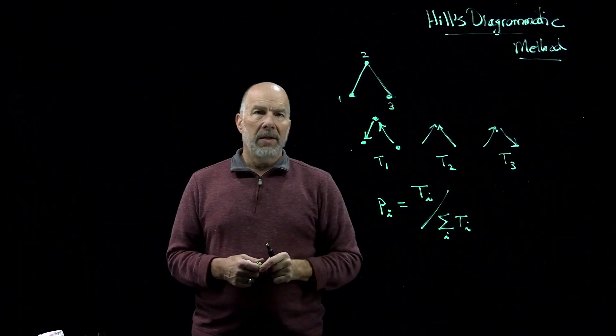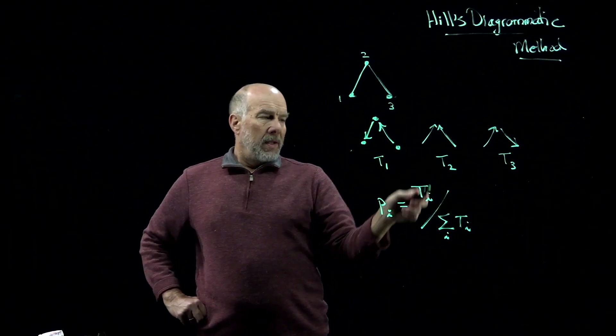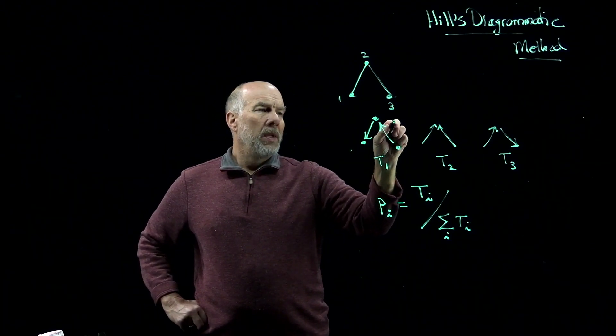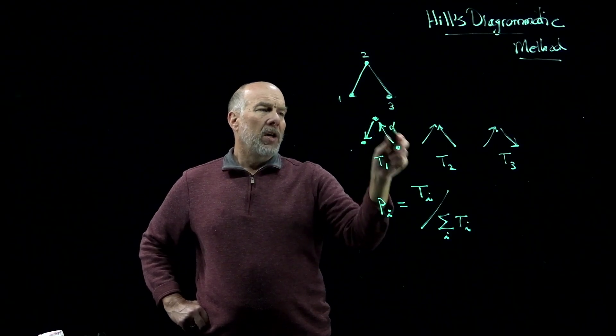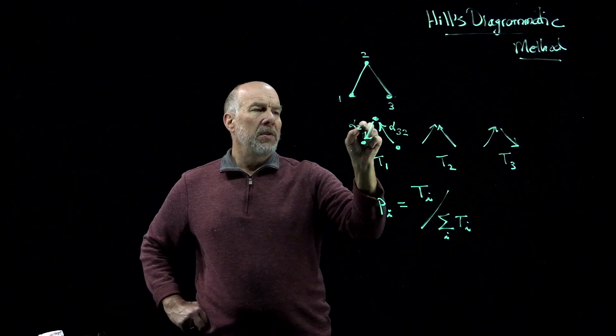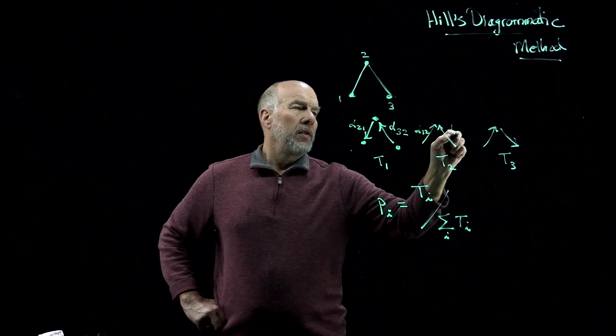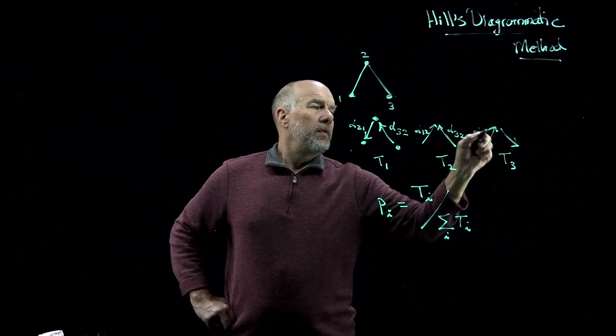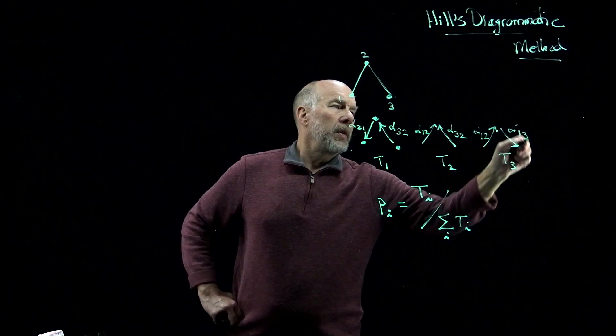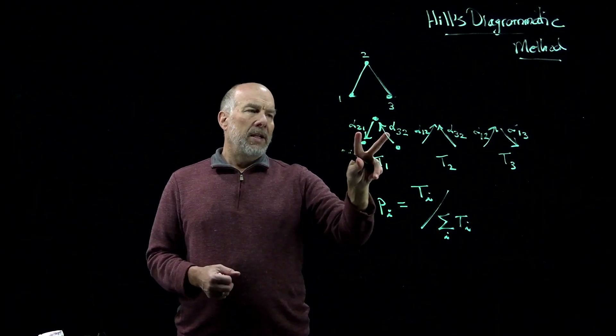Now, when I put a T like this here in an algebraic expression, what I mean is that the product of the rate constants that are indicated in the diagram. So this would be the rate constant for this arc is alpha state three to state two, and this one is alpha state two to state one. This is alpha one two, this is alpha three two, this is alpha one two, and alpha one three. So each tree is going to be a monomial that has two factors.